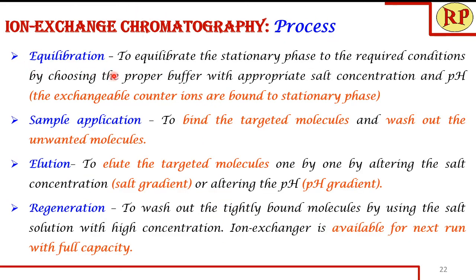To summarize the process: equilibration is the first step, where counter ions (exchangeable ions) get attached to the fixed cations or anions, with proper salt concentration and pH chosen for the buffer. Sample application binds the targeted molecules to the exchanger while unwanted molecules are washed off. Elution separates components of interest one by one using either salt gradient or pH gradient. Regeneration uses high salt concentration to remove all tightly bound impurities and restore full column capacity. Finally, re-equilibration with low ionic strength salt solution prepares the column for the next run.